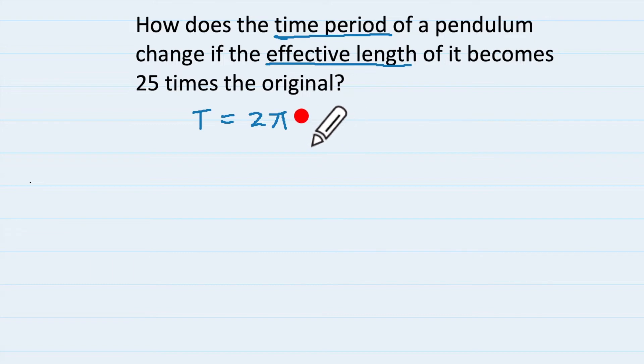t is equal to 2 pi under root l upon g, right? Now time period how does it change they are asking and the effective length means they are talking about this length. Are they talking about g? No, that means g is constant.